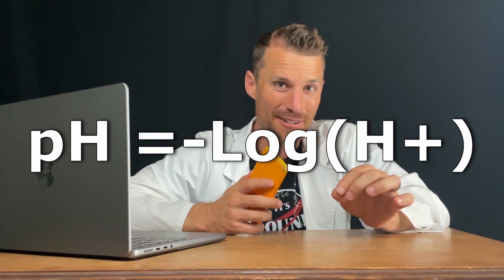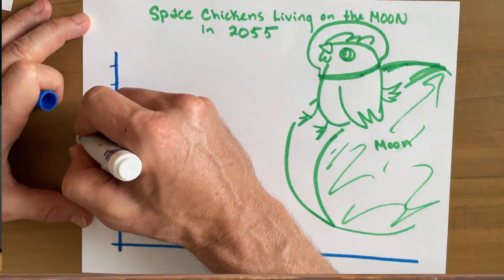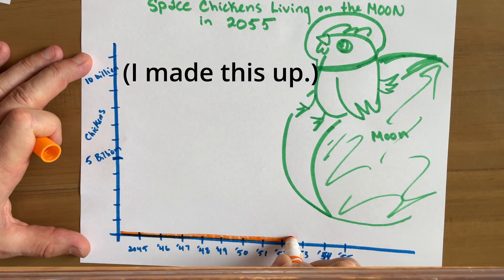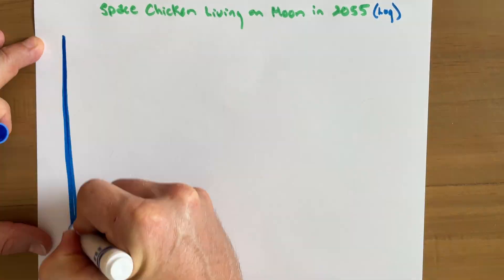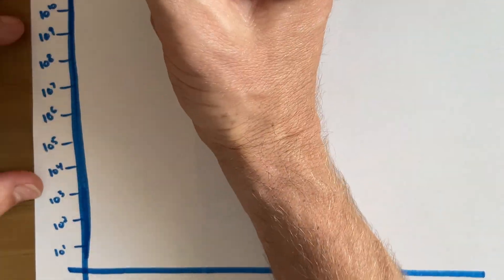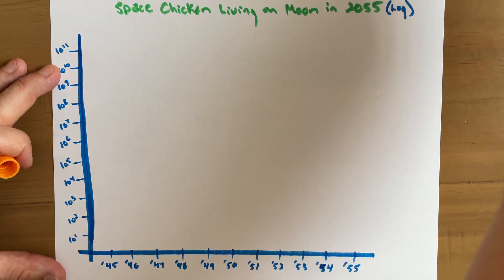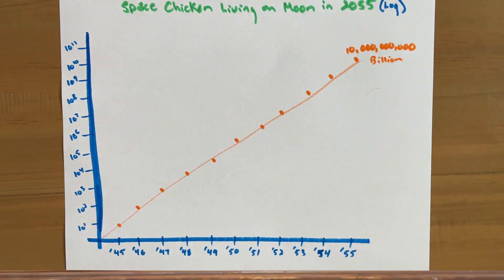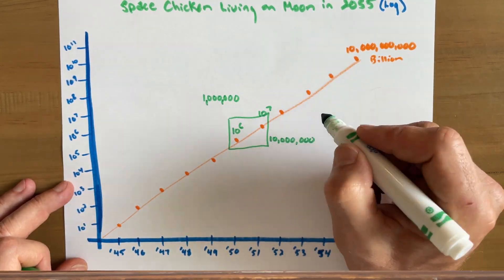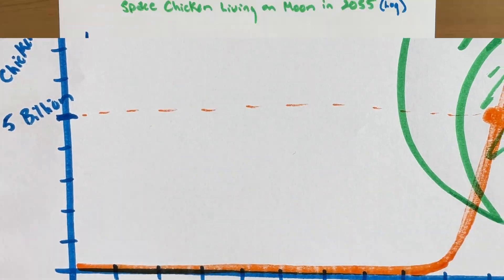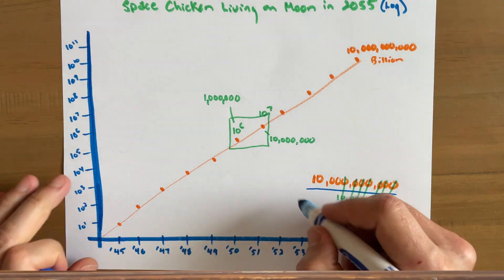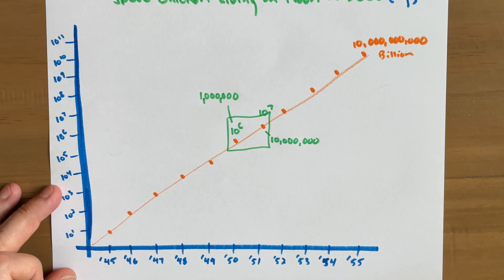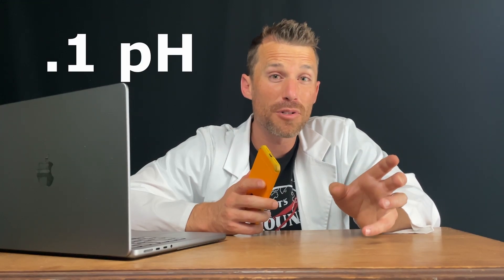The pH scale is a log scale. Take this graph for example: number of space chickens living on the moon in 2055. It looks like things start to happen at around years 8 to 10, and the first 8 years look like they have about the same amount of space chickens. But if we change the y-axis to be in bases of 10, we see a different picture — the number of space chickens was actually increasing linearly. Years 6 to 7 look like they're at about zero in the first graph, because in comparison to 10 billion, they're such tiny numbers. But a million and 100 million space chickens is a significant feat. The pH scale is also a log scale, and that 0.1 change represents a 30% increase of dissolved CO2 — and that means something.